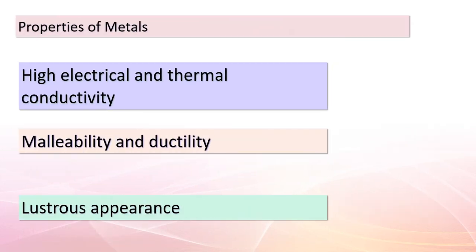Let's focus on metals and the exceptional traits that define them. Metals are fantastic conductors of both electricity and heat, which is why they're used in electrical components and cooking utensils. Another remarkable property is their malleability — they can be hammered into thin sheets — alongside ductility, allowing them to be drawn into thin wires. Metals also tend to lose electrons during chemical reactions, leading to the formation of positively charged ions called cations.